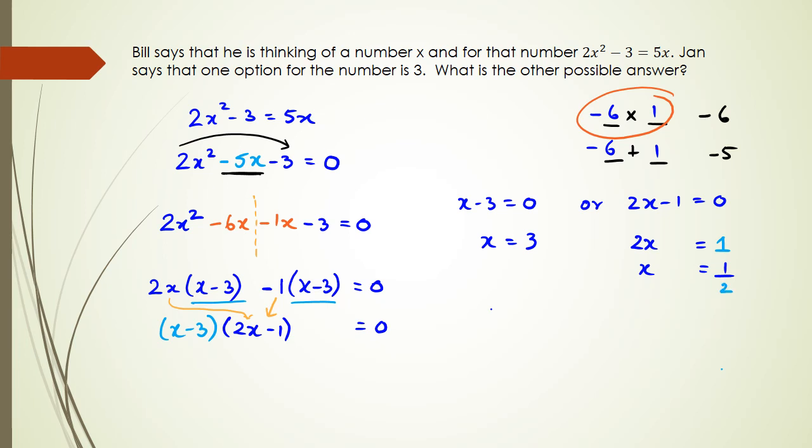If you go back to the question, the question says one of the options for the number is 3, which we already have. So the other possible answer is 0.5. We just want to write that as a little statement. Possible answer is 1 over 2. That's basically it for this short little video, guys. Thank you for watching, and as usual, don't forget to like, share, and subscribe.